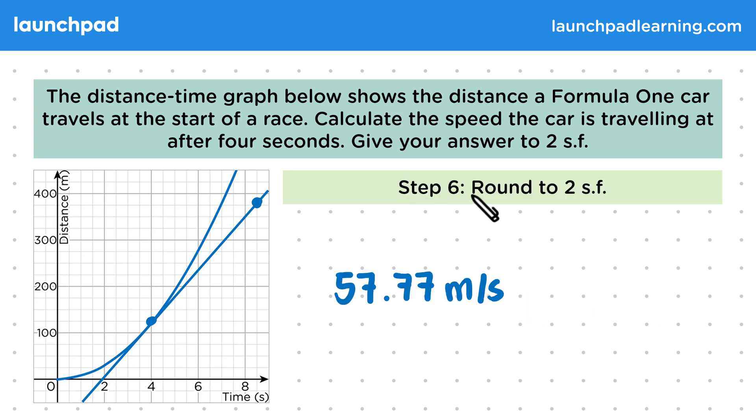Then finally in step 6, round to two significant figures. To round to two significant figures, we count our first two non-zero digits and then check the third. In this case, our third significant figure is 7, which is greater than 5, so we have to round up our second significant figure, which was also 7. This gives us a final answer of 58 metres per second.